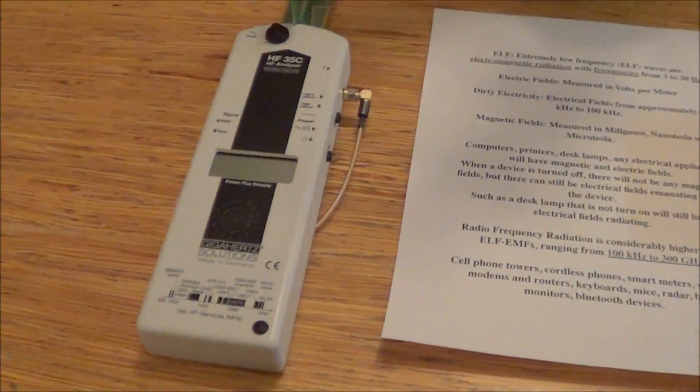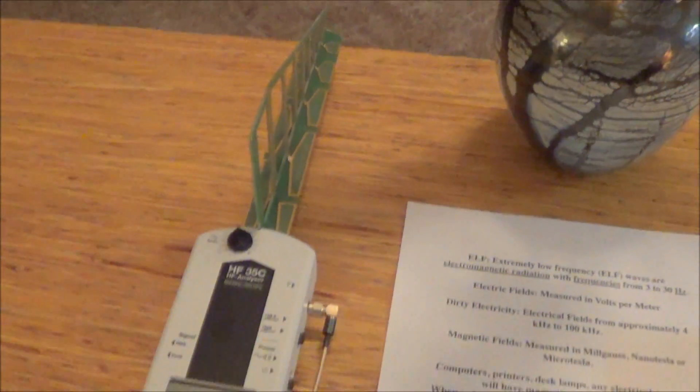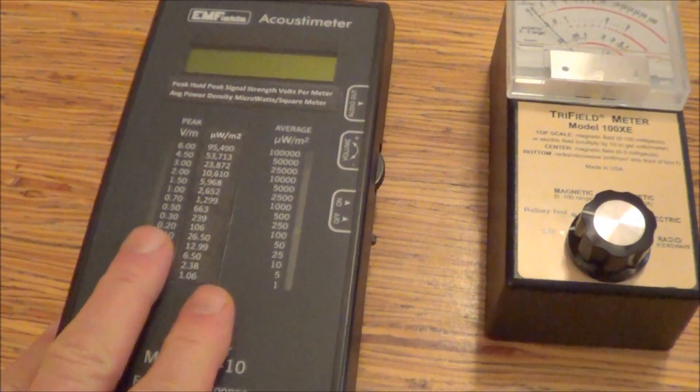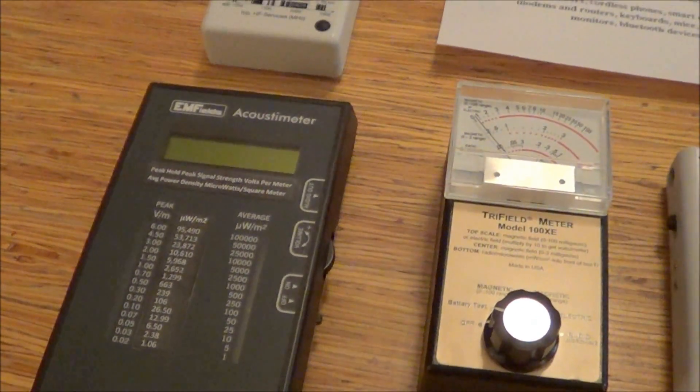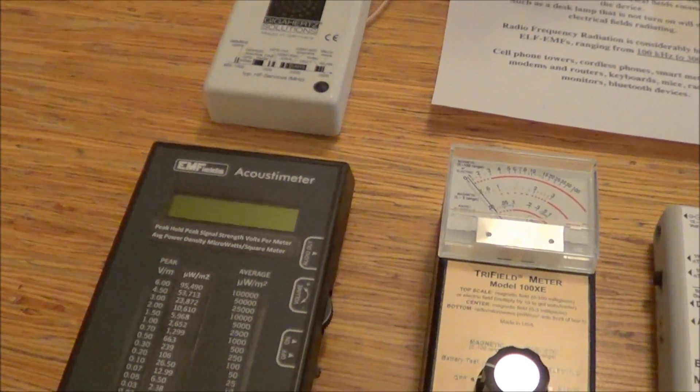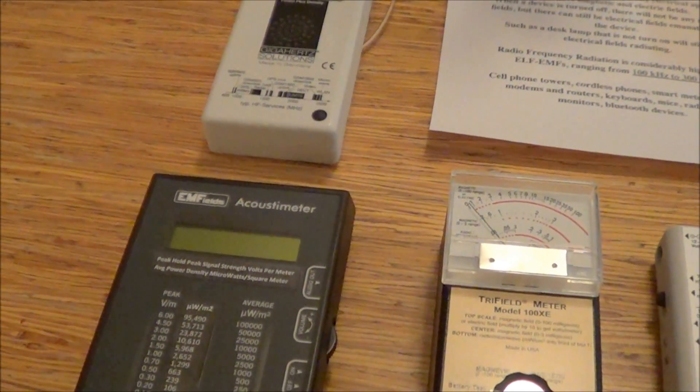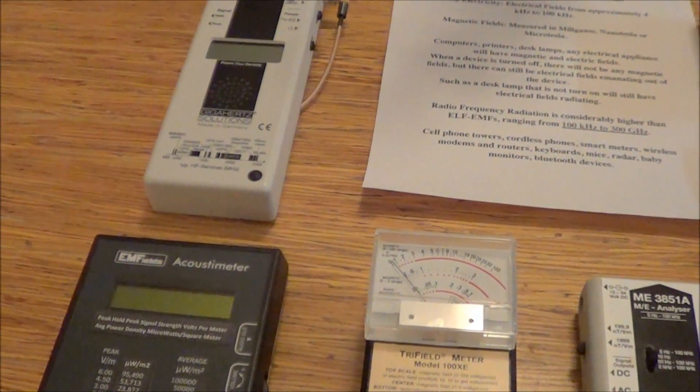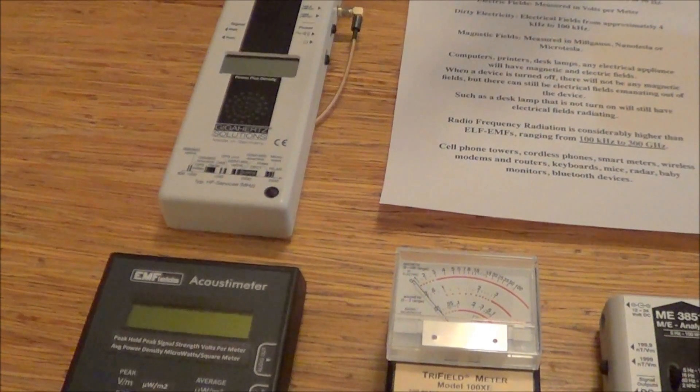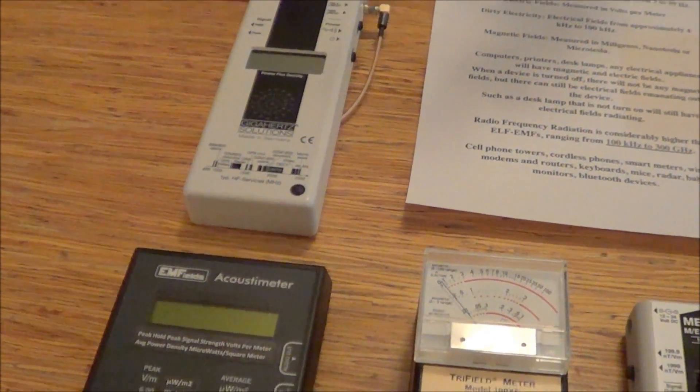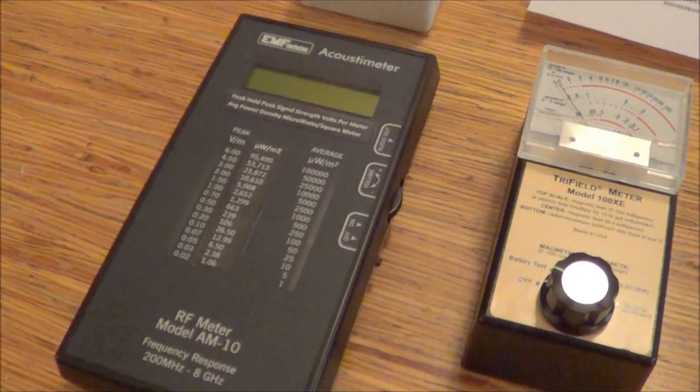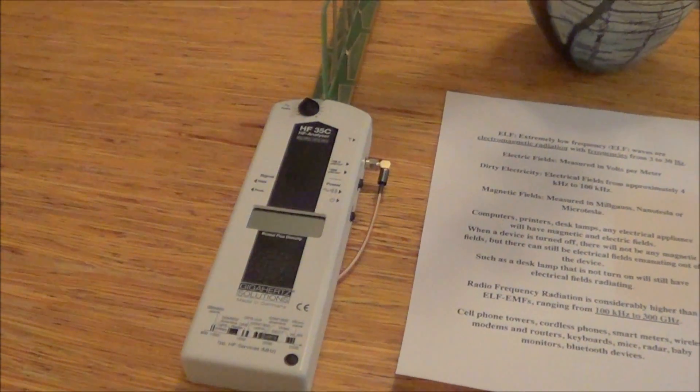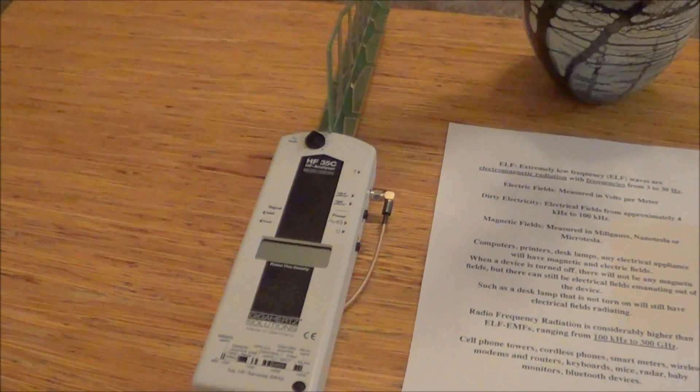The radiofrequency meters, such as this gigahertz solutions meter, or here's an acoustometer. This is a radiofrequency meter as well. These meters are going to measure your cell phone, the radiation coming off your cell phone, cell phone towers, cordless phones, smart meters, wireless modems and routers, wireless keyboards and mice, radar, baby monitors, Bluetooth devices. So, again, one needs to use the proper meter for measuring the particular range of the electromagnetic spectrum that they're interested in.